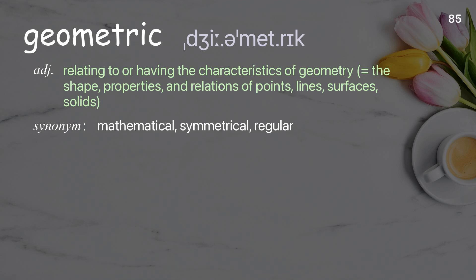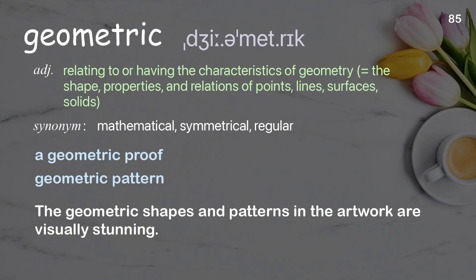Geometric: relating to or having the characteristics of geometry, which equals the shape, properties and relations of points, lines, surfaces and solids. Examples: a geometric proof, geometric pattern. The geometric shapes and patterns in the artwork are visually stunning.